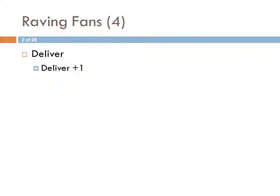Deliver plus one is, again, to exceed — it has several meanings. Deliver plus one as far as 1% improvement: if you think about that 1% improvement by day, by week, across a year it can be substantial improvements. For example, 1% a week over 52 weeks is over 50% improvement in a year's time.